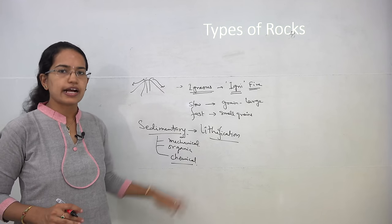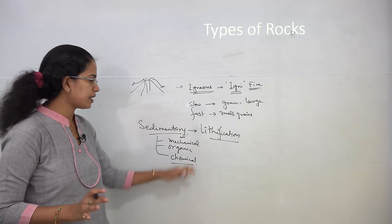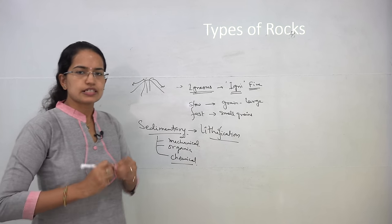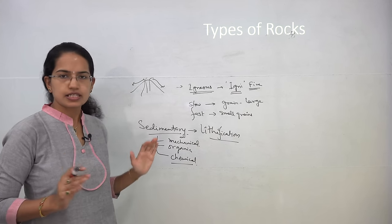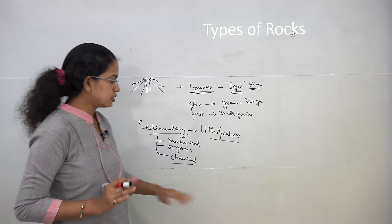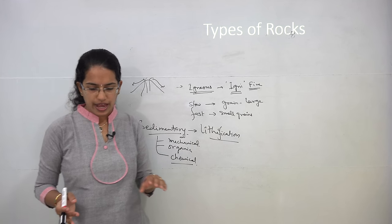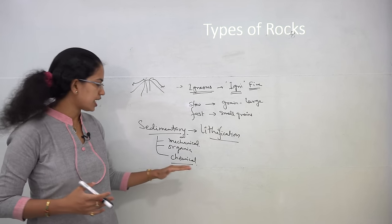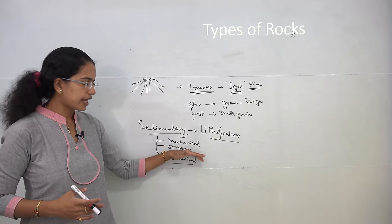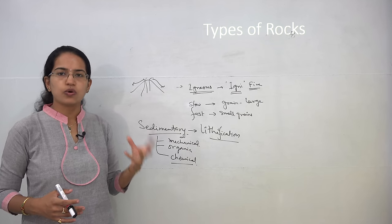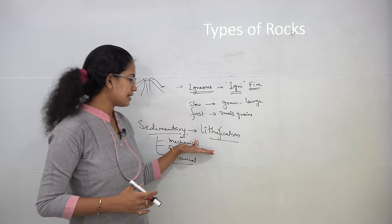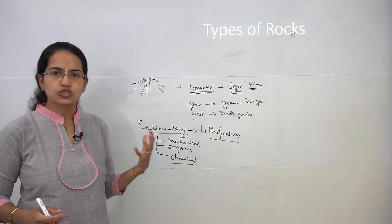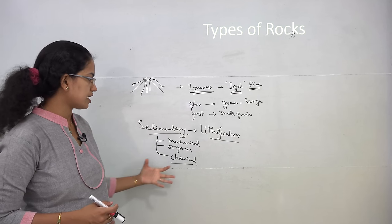A good example applicable to all three types of sedimentary rock is limestone. For chemical sedimentary rocks specifically, examples include limestone, halite, potash, and chert. Under organic rocks, you would have chalk, coal, and limestone. Under mechanical rocks, examples include limestone, sandstone, shale, and loess.